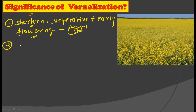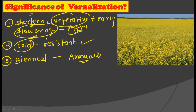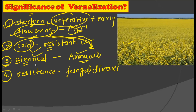The second advantage of vernalization is that it makes plants cold resistant — these plants develop immunity against cold. The third advantage is that biennial plants can be converted into annual plants by reducing the period of vegetative growth and inducing flowering earlier. The fourth advantage is that plants germinated through vernalization show resistance to fungal diseases. So there are four key advantages: shortened vegetative growth with early flowering, cold resistance, conversion of biennials to annuals, and resistance to fungal diseases.